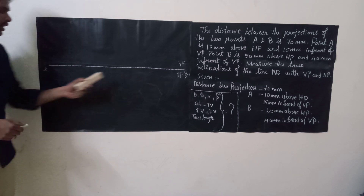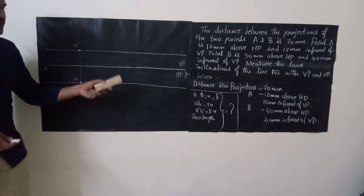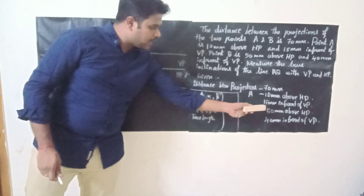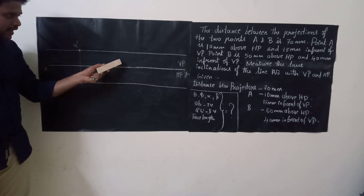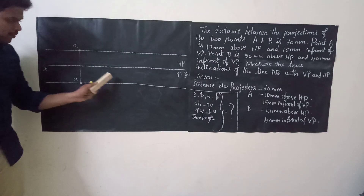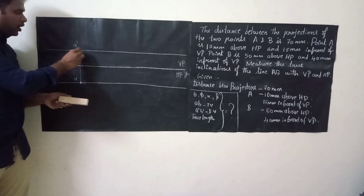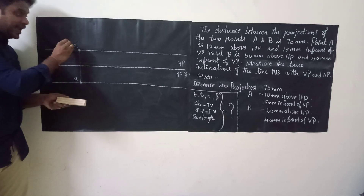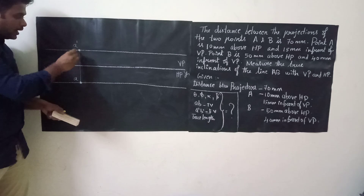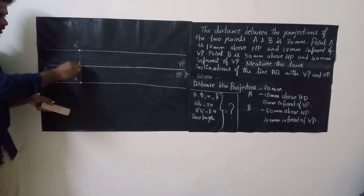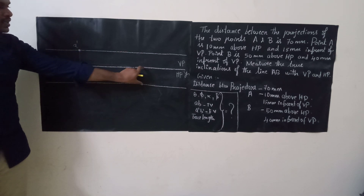First step is to draw a reference line XY. According to first angle projection, the vertical plane is above and horizontal plane is below. Using the first data, point A is 10 mm above HP and 15 mm in front of VP. From the reference line take 10 mm and draw a straight line, then take 15 mm and draw another straight line. Keep a point on the left side and name it A dash. A dash and A will be lying on the same line — from reference line the distance is 10 mm above and 15 mm below.